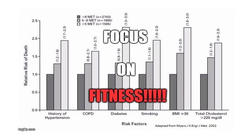I go back to this fantastic graph adapted from Jonathan Myers' seminal paper published in the New England Journal of Medicine in 2002, which looked at multiple different conditions — hypertension, COPD, diabetes, smoking, BMI over 30, hypercholesterolemia. Increasing fitness by one MET was associated with a 13% reduction in mortality, independent of diagnosis. And this is true for obesity as well.